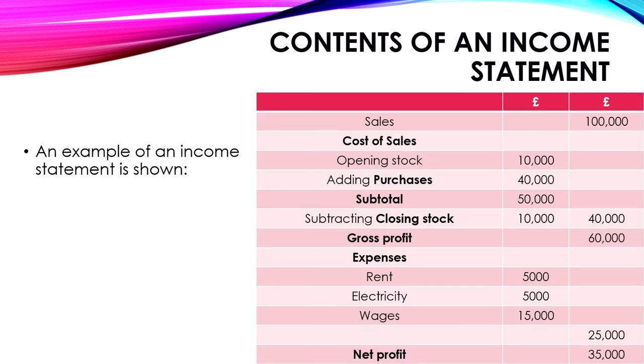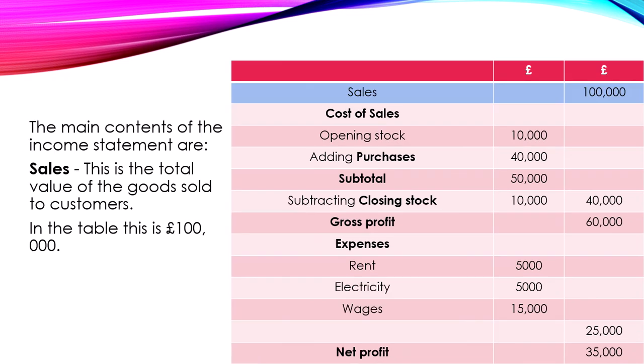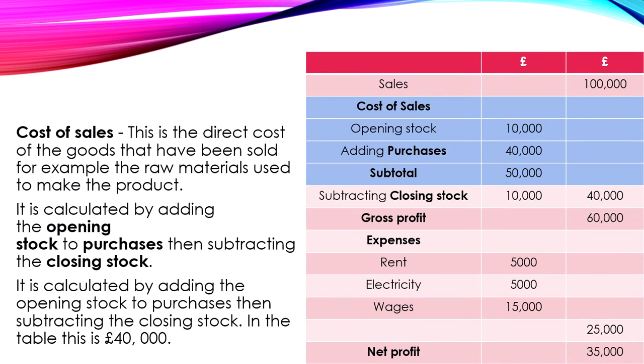Contents of an income statement. An example of an income statement is shown. The main contents include sales — the total value of goods sold to customers, which in this table is 100,000 euros — and the cost of sales, which is the direct cost of the goods that have been sold, for example the raw materials used to make the product. It is calculated by adding the opening stock to purchases then subtracting the closing stock. In this table this is 40,000 euros.